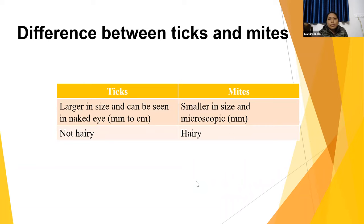Ticks and mites are under the same order, differing only in family. The difference between ticks and mites is essentially only size. Ticks can be seen by the naked eye, ranging from a few millimeters to a few centimeters. Mites are less than one millimeter and cannot be seen by the naked eye — a microscope is needed. Ticks are less hairy, while mites have more hairs on their body parts.